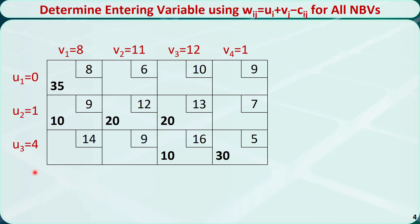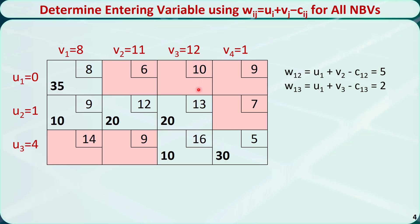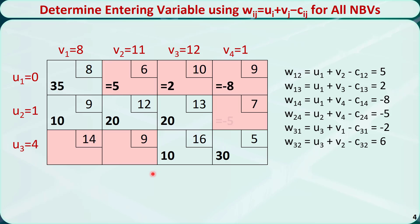In step 4, we identify all the non-basic variables, marked in red. For each non-basic variable, we calculate wij = ui + vj − cij. For the first non-basic variable, w12 = u1 + v2 − c12 = 0 + 11 − 6 = 5. For the second non-basic variable, w13 = u1 + v3 − c13 = 0 + 12 − 10 = 2. We do this for all other non-basic variables and show them in the tableau.